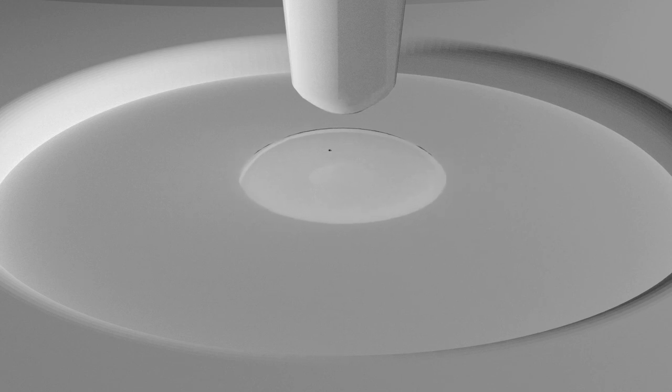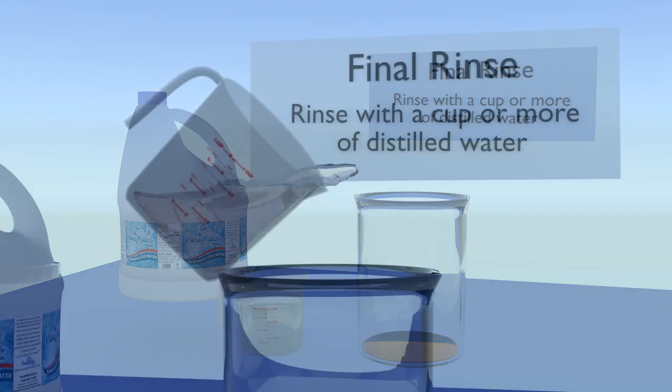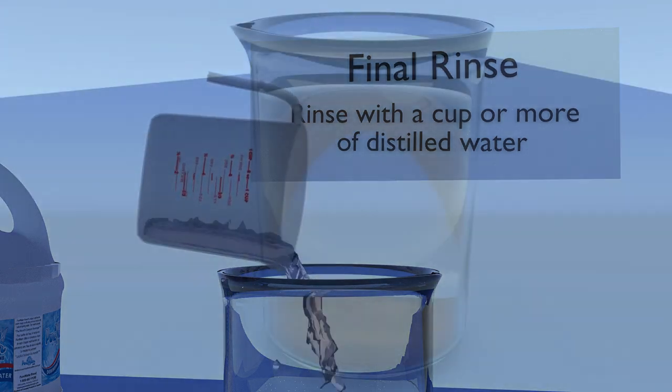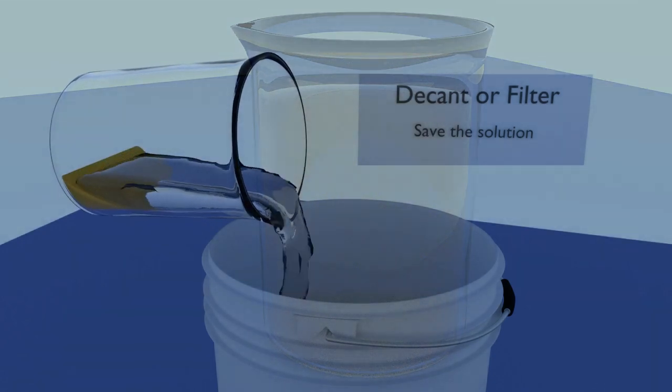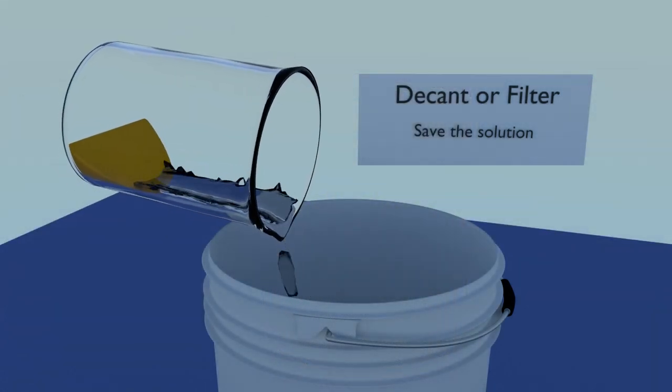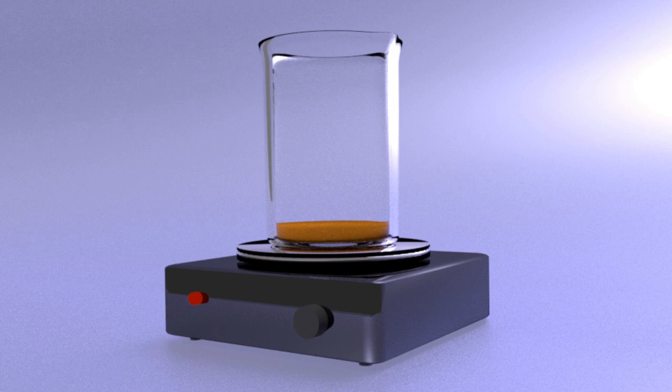The distilled water will wash away any minerals left behind by your tap water. Add a cup or more of distilled water. Give your gold mud some time to settle. Then filter or decant your water. You can now dry your gold mud, either by air drying or heating on a hot plate. Please note, do not put a cold beaker on a hot hot plate. It will shatter.